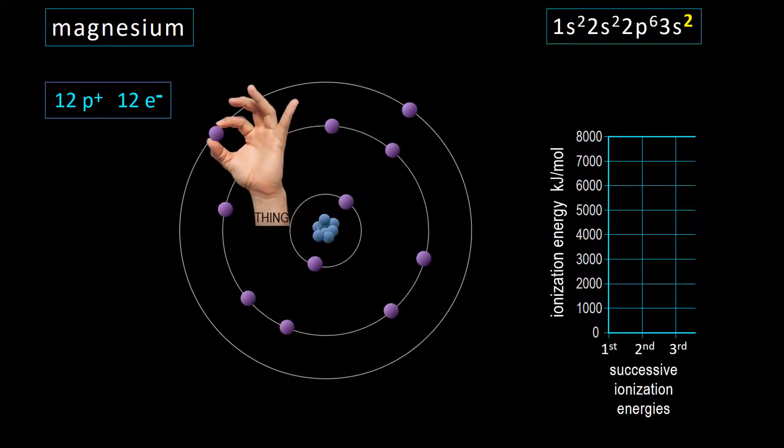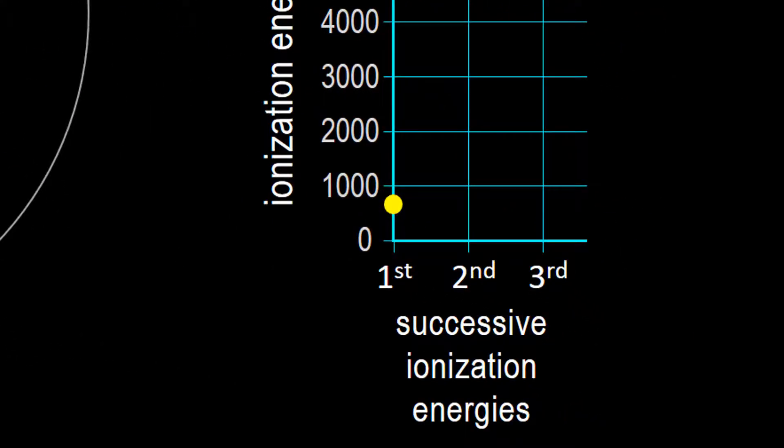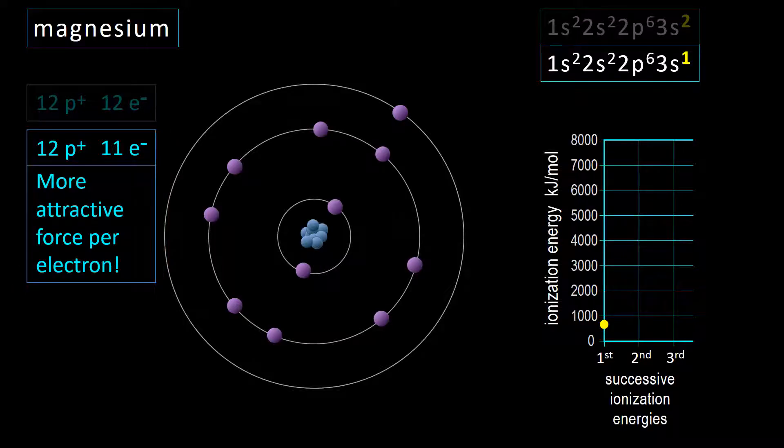Note that magnesium wants to lose its two valence electrons to acquire the stable electron configuration of neon. The first ionization energy is relatively low, as shown on the graph. Now, however, with one less electron, there is more attractive force per electron from the same 12 protons. How will that change the amount of energy needed to remove the second electron?